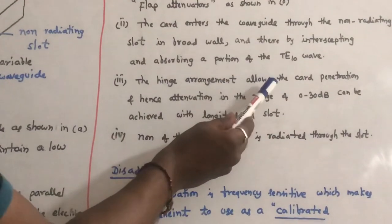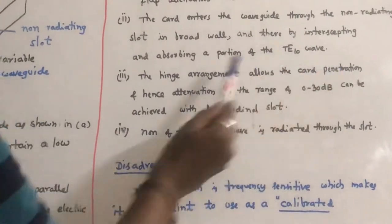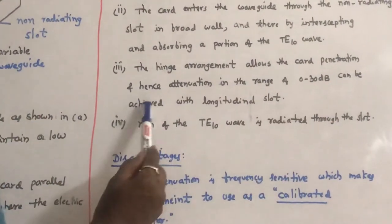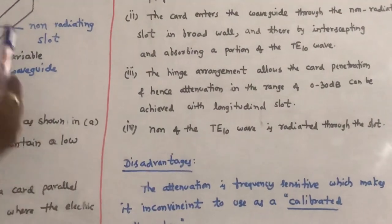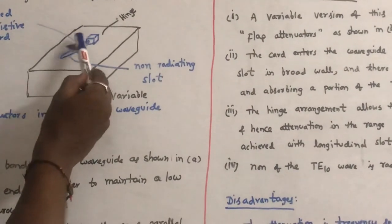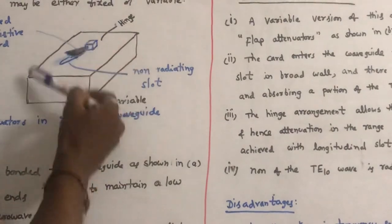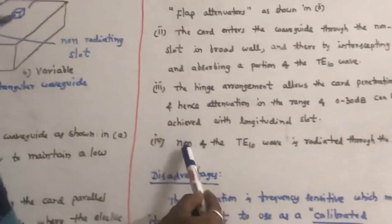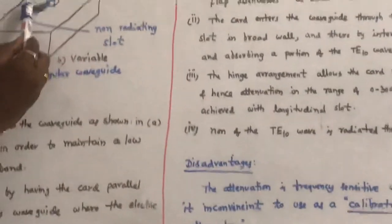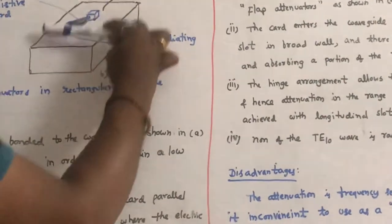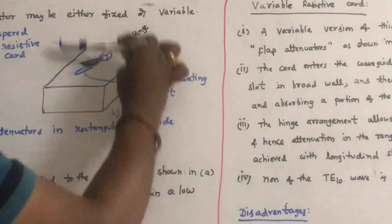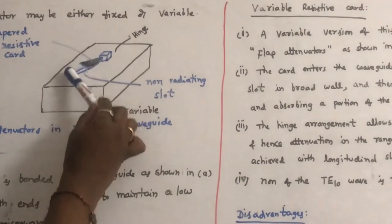The hinge arrangement allows variable cord penetration, and attenuation in the range of 0 to 30 dB can be achieved with this longitudinal slot. None of the TE10 wave is radiated through this slot — no electromagnetic energy is radiated through it — which is why it is called a non-radiating slot.